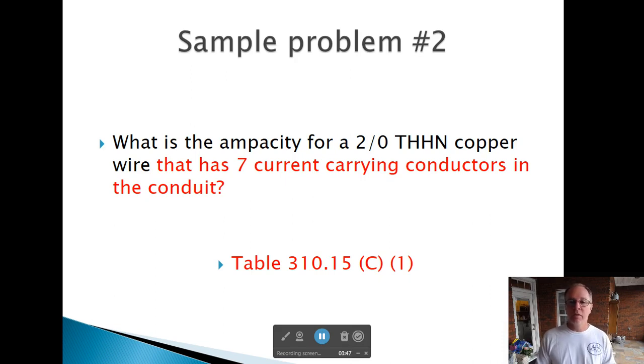What is the ampacity of a 2-Aught THHN copper wire that has seven current-carrying conductors in the conduit? We go to Table 310-16 and we find 2-Aught THHN copper, which we know is 195 amps. Then we go to Table 310-15-C1 to find out what we've got to do because we've got seven current-carrying wires in it.